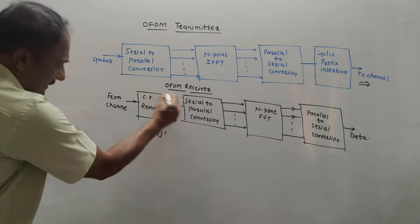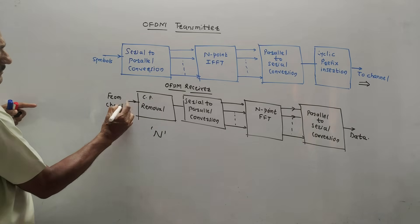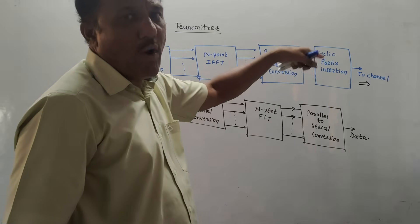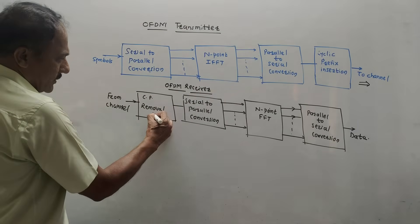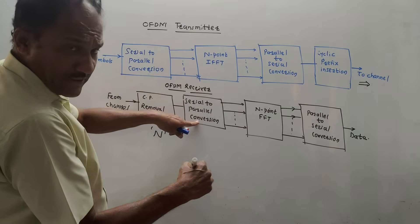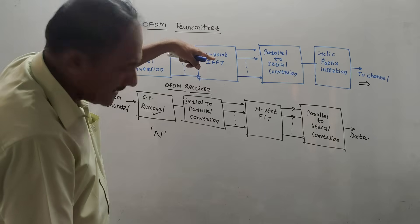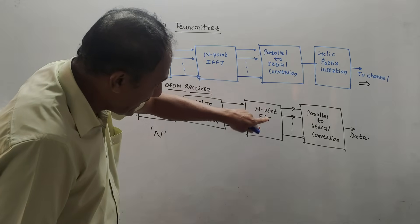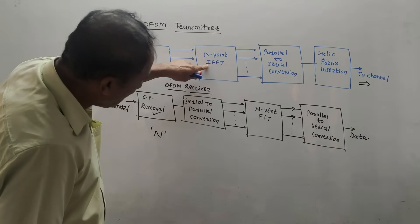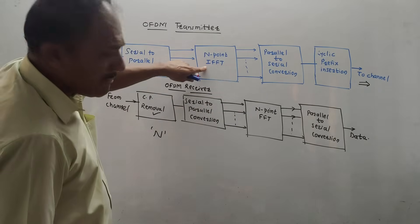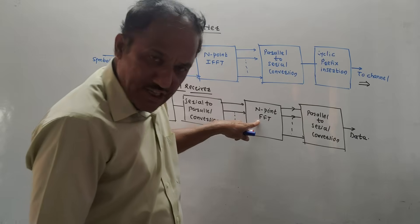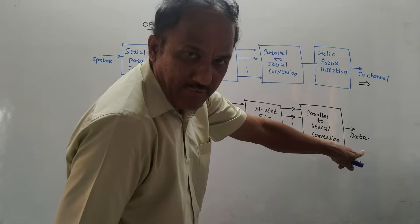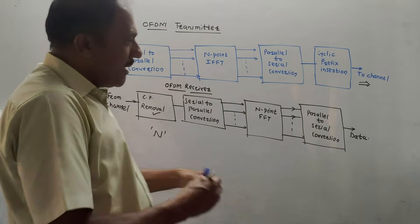At the receiver end, the first block removes the cyclic prefix coding that was inserted to avoid inter-symbol interference. Next is serial-to-parallel conversion for demodulation. N-point FFT — fast Fourier transformation — is used for demodulation, which is the reverse operation of IFFT. Remember: IFFT corresponds to modulation and FFT corresponds to demodulation. After demodulation, parallel-to-serial conversion gives back the original serial data. This is the basic block diagram of the OFDM transmitter and receiver.